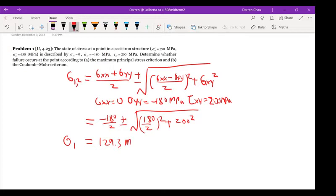We get sigma 1 equals to 129.3 MPa, sigma 2 equals to negative 309 MPa. Just keep in mind that sigma 1 is always larger than sigma 2 and it's always larger than sigma 3. It's just a convention, larger than sigma 2 and larger than sigma 3 if there's any sigma 3.